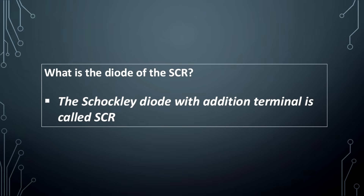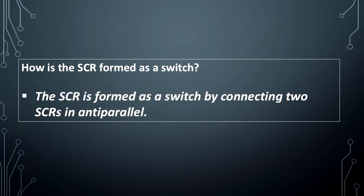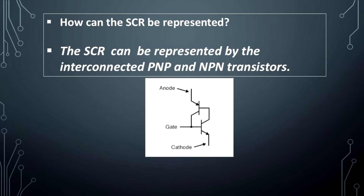What is the diode of the SCR? The Shockley diode with an additional terminal is called SCR. How is the SCR formed as a switch? The SCR is formed as a switch by connecting two SCRs in anti-parallel. How can the SCR be represented? The SCR can be represented by interconnected PNP and NPN transistors.